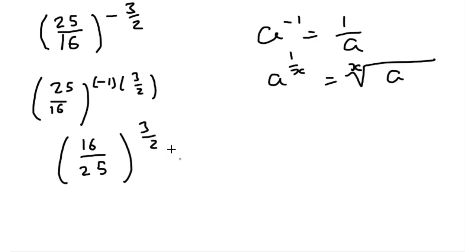This 2 here is the same as taking the square root, so if we take the square root of the top and bottom, this is now like having 4 over 5 raised to the power of 3, and now we just raise the top and bottom to the power of 3, and this is equal to 64 over 125.